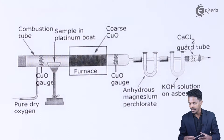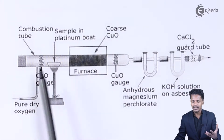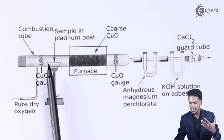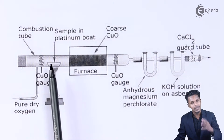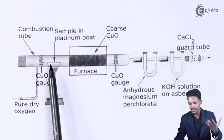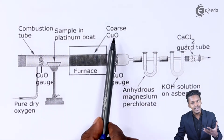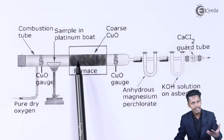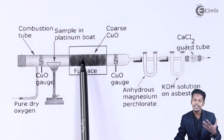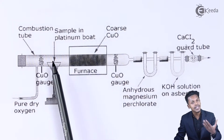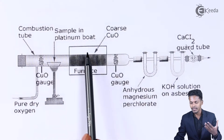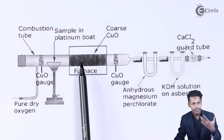If we pass pure dry oxygen through the apparatus, it will react with the organic compound. If the organic compound consists of carbon and hydrogen, we have to determine the percentage of each. Any carbon present will react with the copper oxide (CuO) present in the furnace in coarse mixture form. The CuO will oxidize the carbon to form carbon dioxide, and the hydrogen will also react with CuO to produce water.